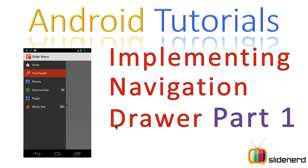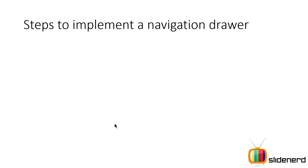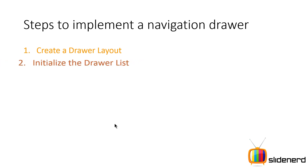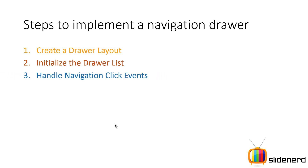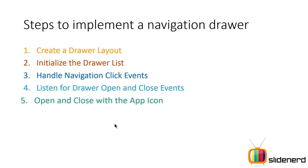In this video we're going to take a look at the steps involved in creating one and jump to Eclipse to start working on the code. These are the steps to keep in mind: Step 1 - create a DrawerLayout, which is a special layout inside which your main content and the navigation drawer list view will go. Step 2 - initialize the drawer list view, whether it's a basic list view or an expandable list view. Step 3 - handle the click events, what happens when a person clicks on an item from the list view inside your navigation drawer.